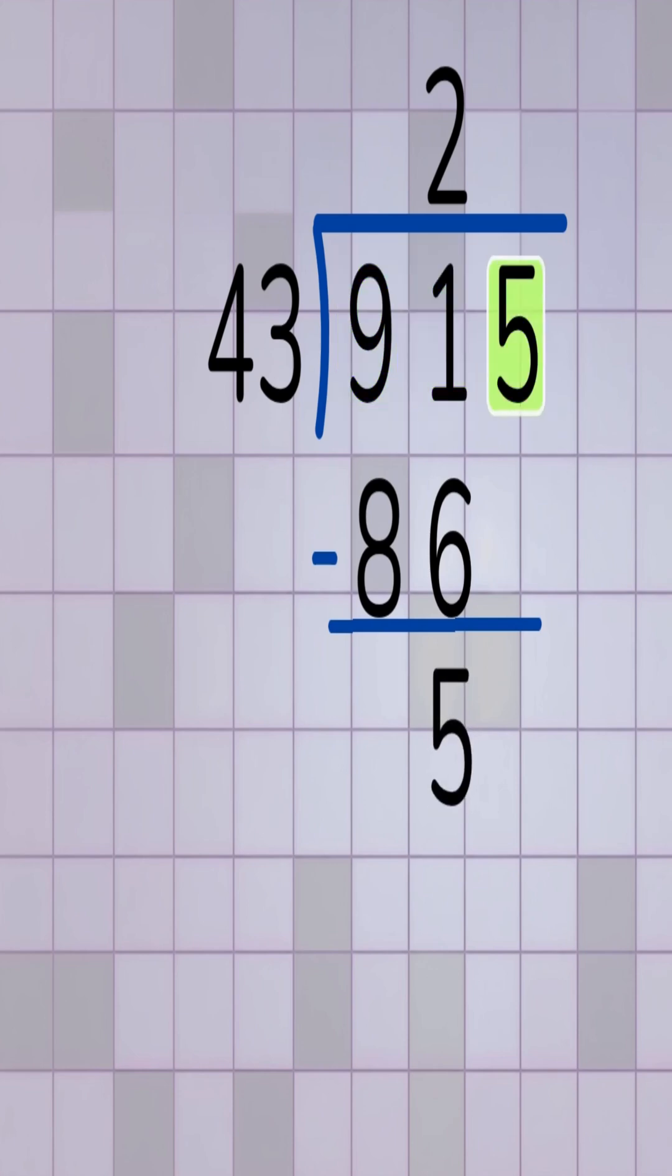Now we bring down the next digit in the dividend, which is the number 5. This gives us a new number to work with, 55. We now ask, how many times does 43 go into 55?